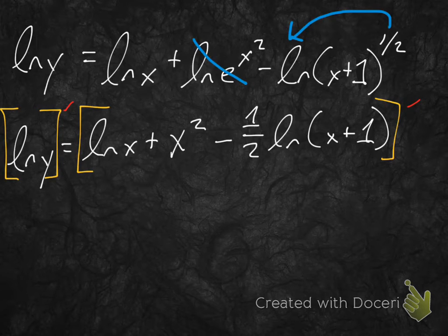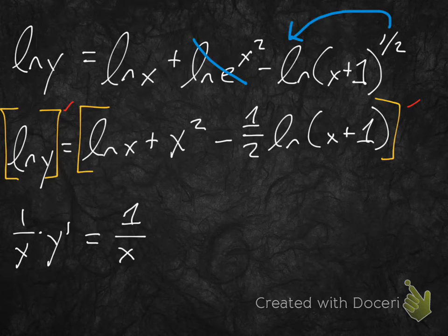So, on the left, we're going to have 1 over y times y prime equals, now let's go ahead and we're taking prime of everything over here. So, ln x, well, we just talked about that. That's just going to be 1 over x plus the derivative of x squared. That's just going to be 2x.